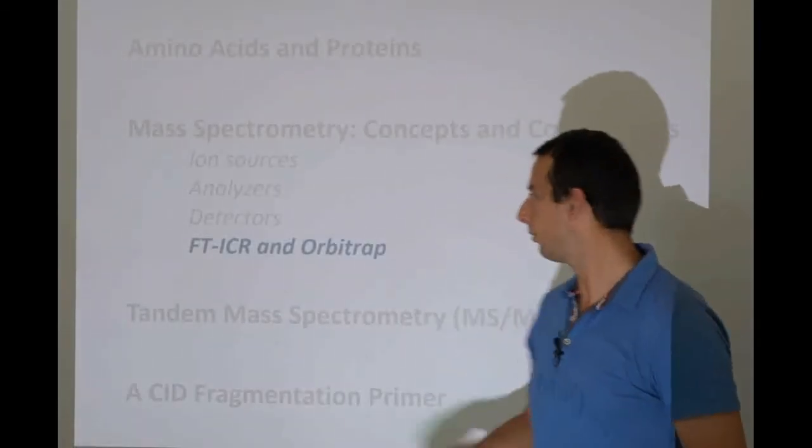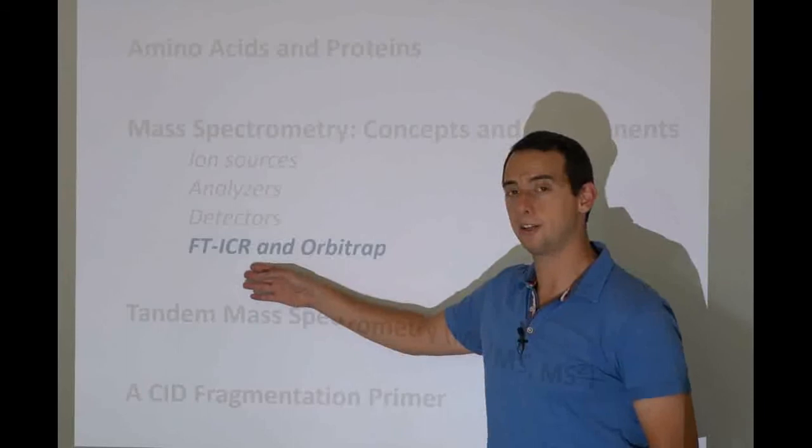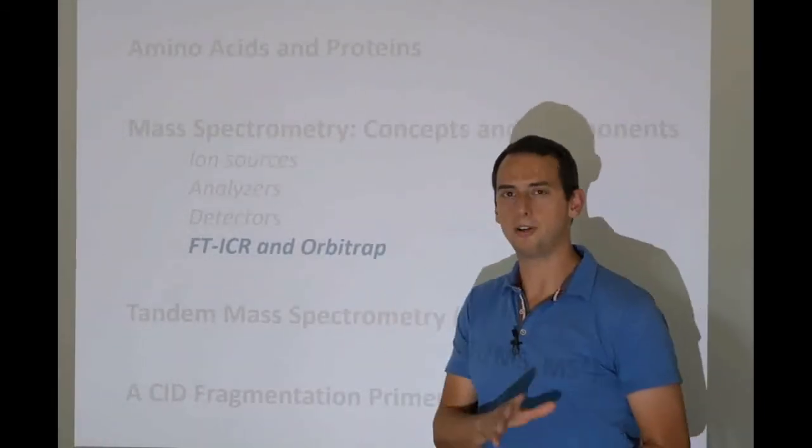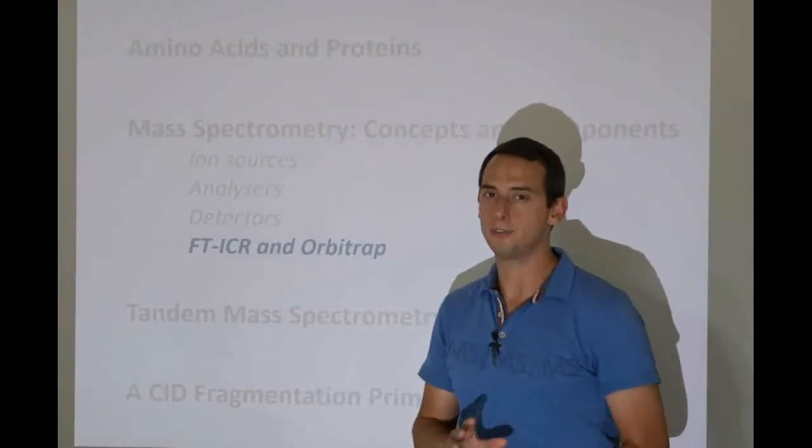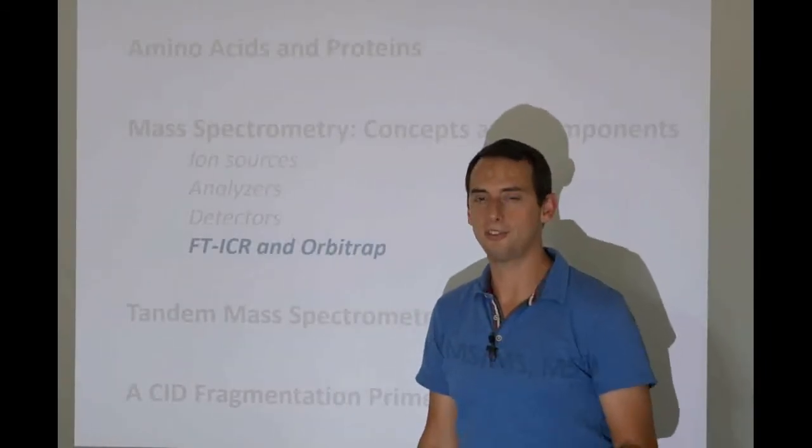With that we come to the end of this fourth lecture. And in the next lecture we'll talk about Fourier transform ion cyclotron resonance and orbitrap instruments because they're a kind of special beast. They actually combine the analyzer and the detector in one. So that will be for the next lecture. Thank you very much and see you then.